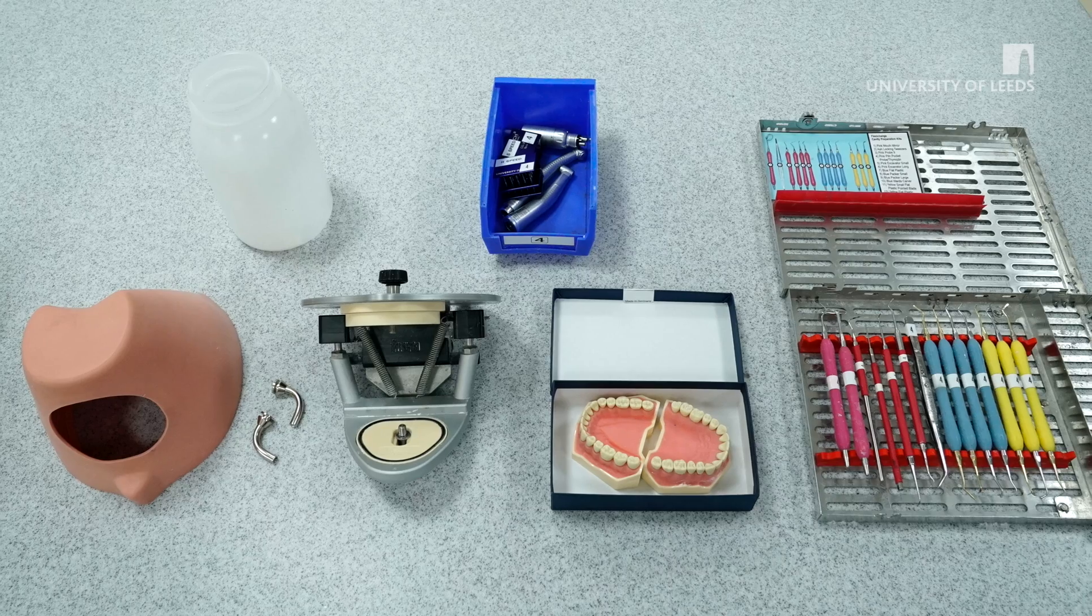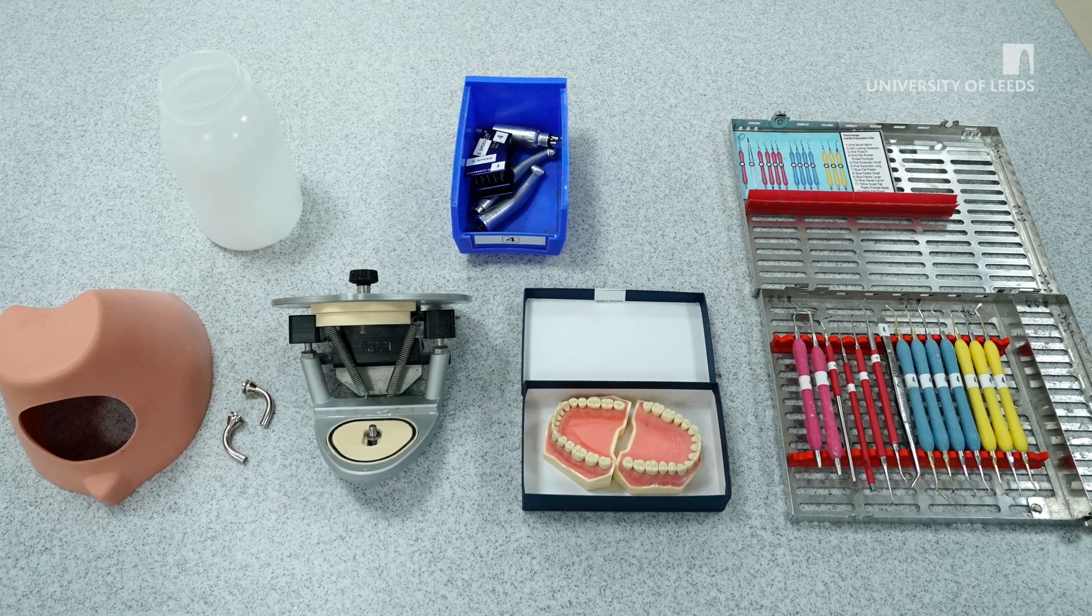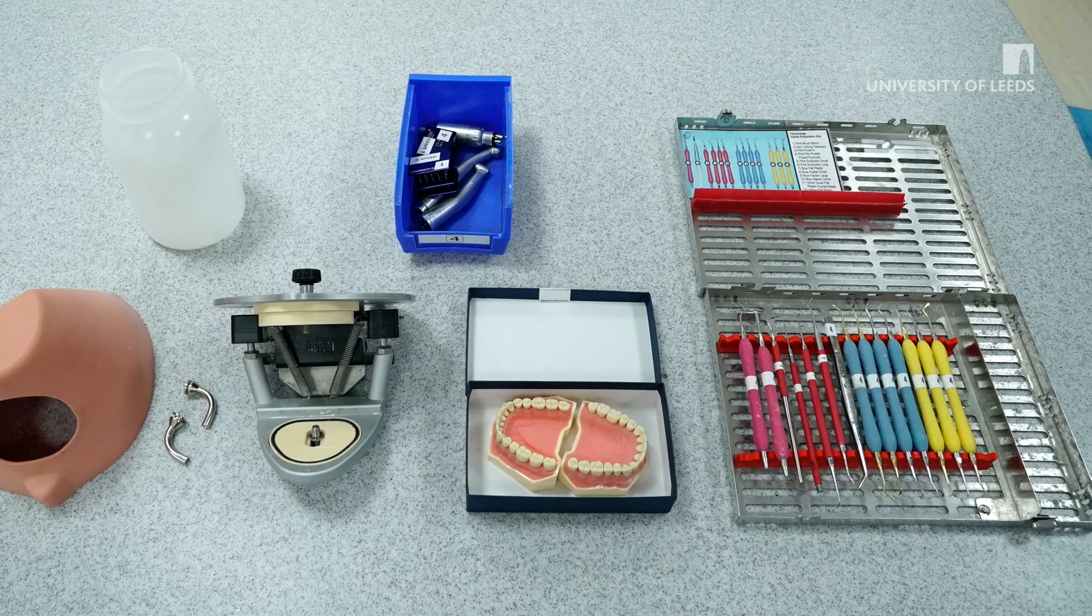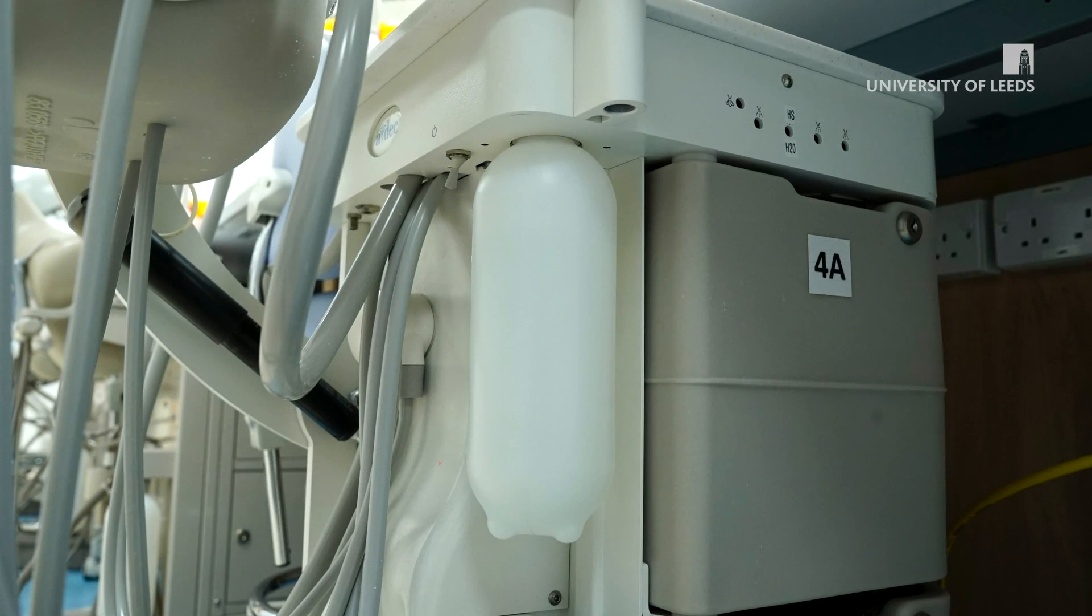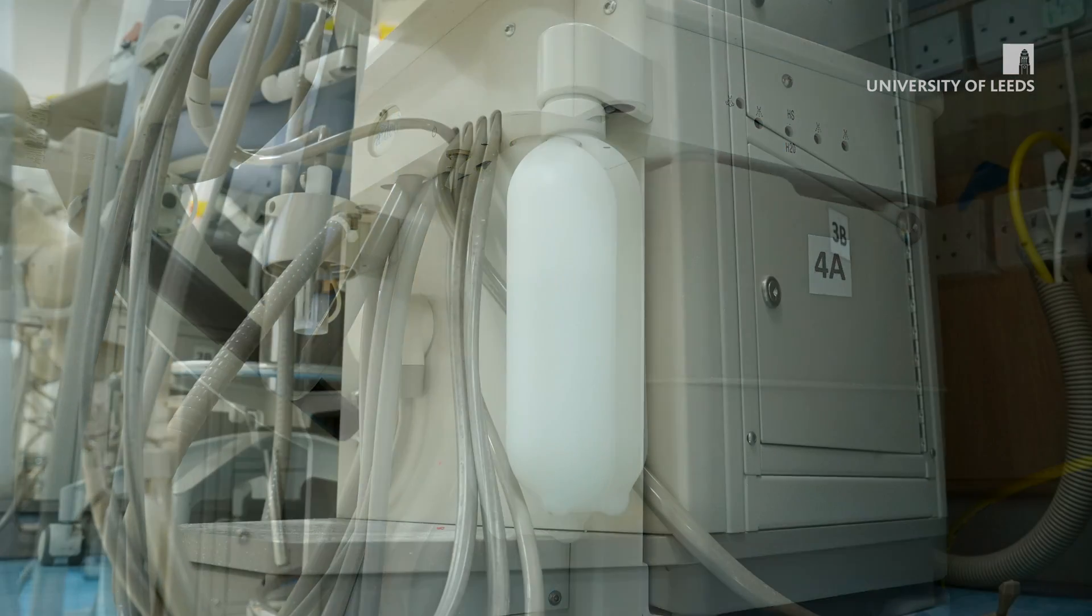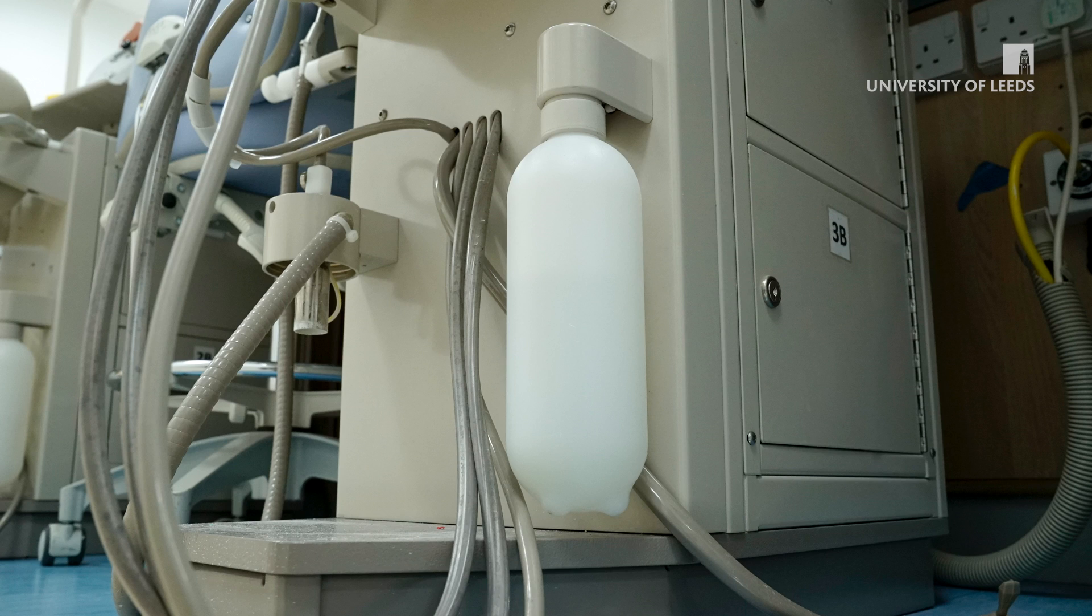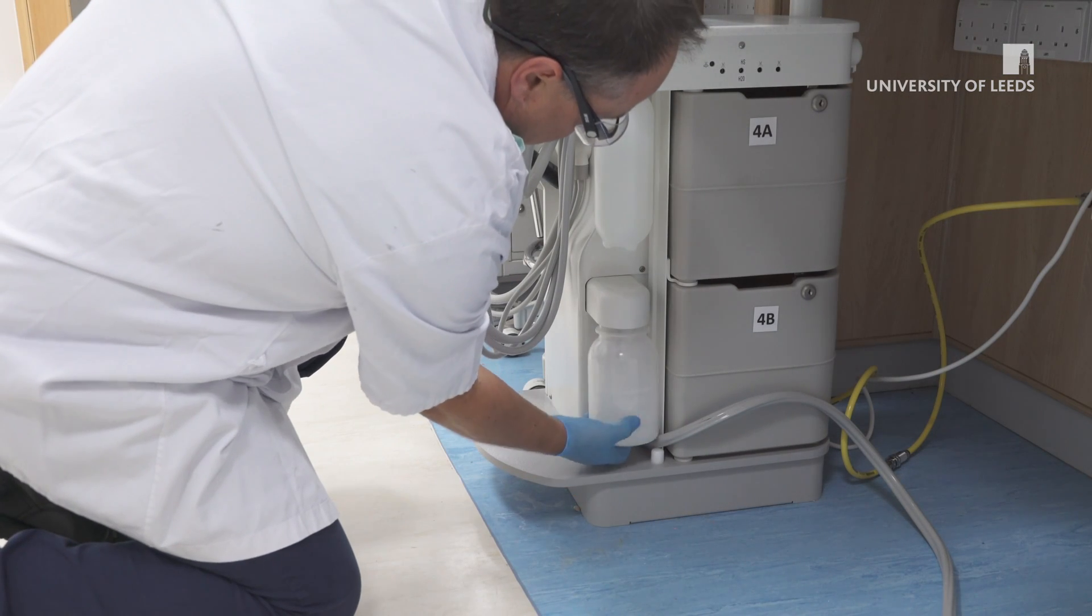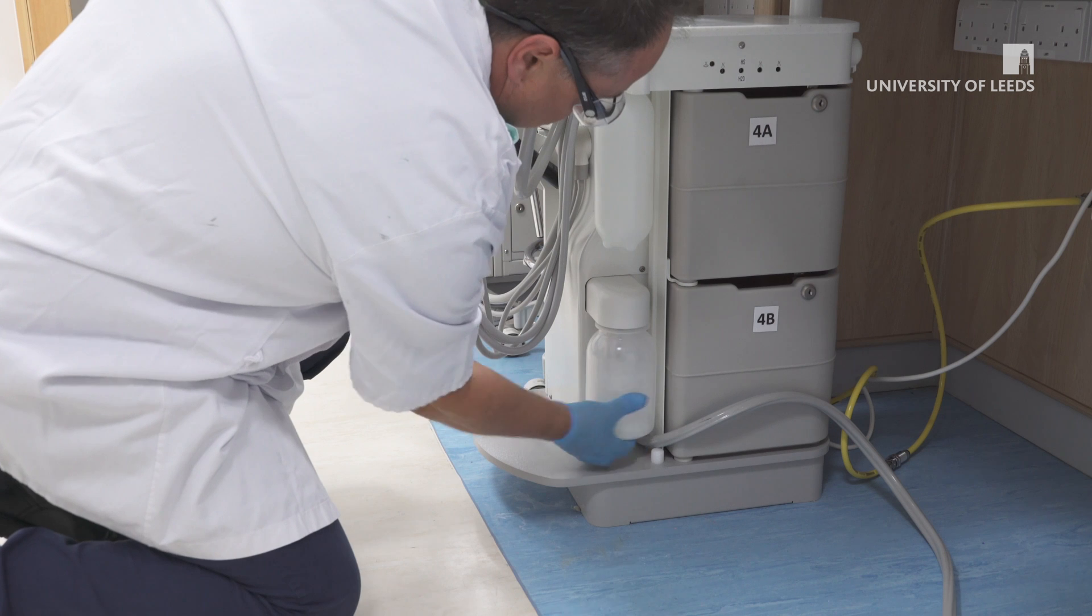On your unit, there will be one mask, a set of jaws, a wastewater bottle and one set of instruments numbered the same as your unit. There will also be a freshwater bottle pre-mounted on the unit, which provides water to the 3-in-1 and the high-speed handpiece. Please mount the wastewater bottle on the unit, taking care not to trap the yellow pipes.